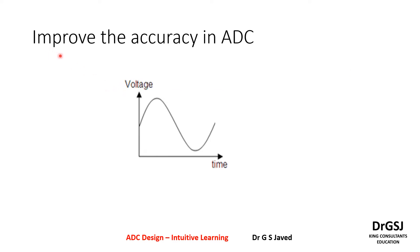How do we improve the accuracy in an ADC? That means how can you increase or identify the smallest value in the amplitude, and how can you identify the smallest value in time? On the x-axis you have the time, on the y-axis you have the voltage. So you can find accuracy in the time axis and/or you can find accuracy in the voltage axis.